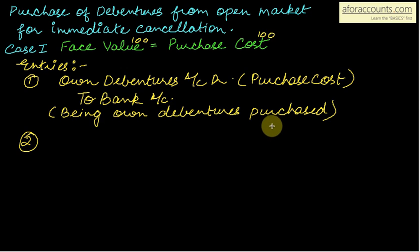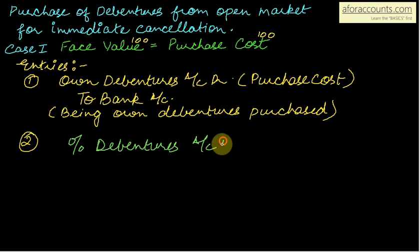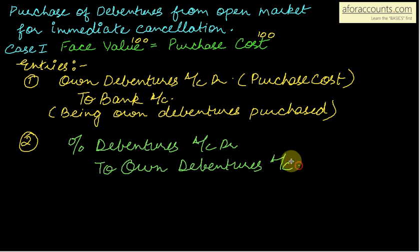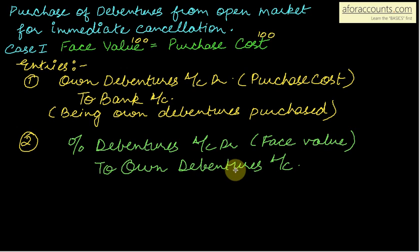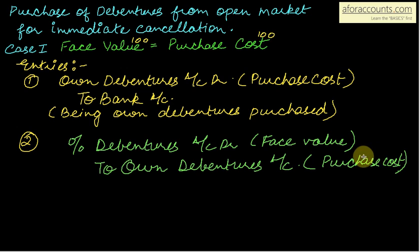You are cancelling debentures, so whichever account has a credit balance, debit it. The entry is: percentage debentures account debit to own debentures account. This is the cancellation entry for own debentures.